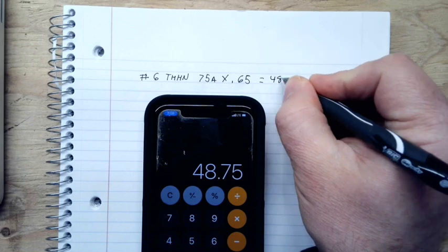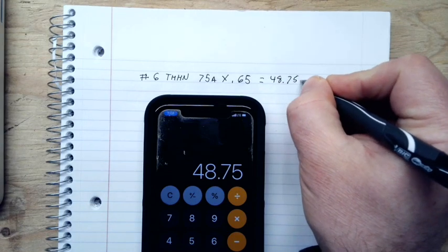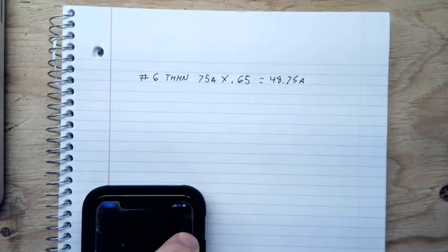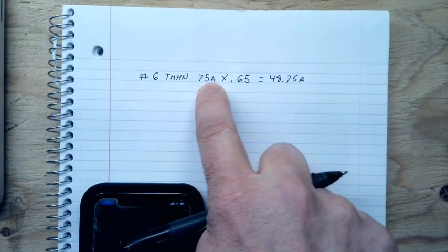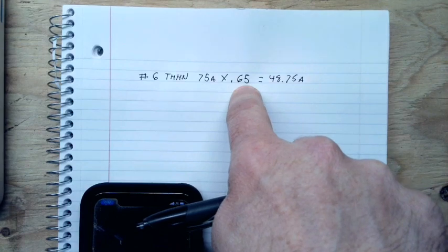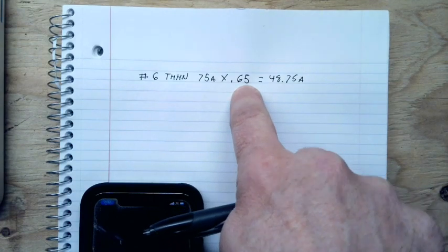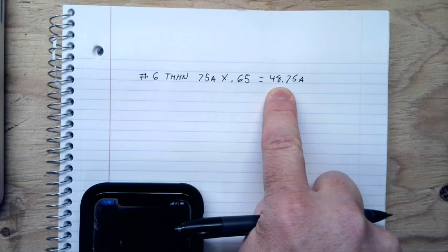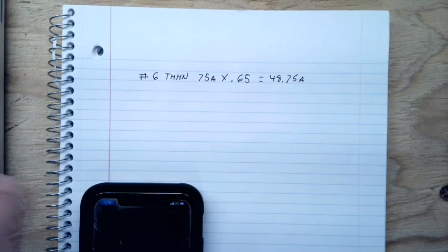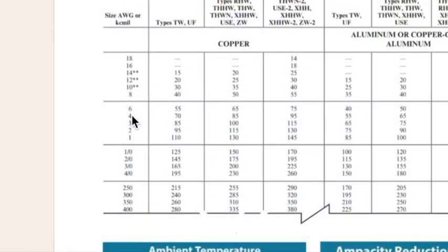Going with 75 amps times 0.65 equals 48.75 amps. Okay, so we've reduced this number 6 wire, which is good to 75. But because it's being run in a hot temperature or a hot ambient temperature, we have to reduce it. So now it's only good to 48.75, not good enough for what we need. So now we need to upsize the wire. So we're going to go from a number 6 to a number 4.